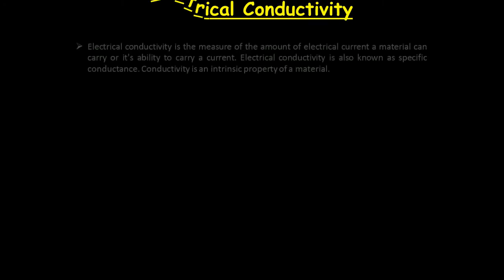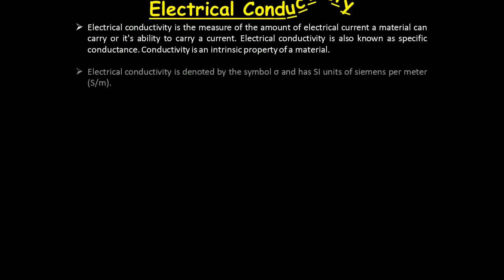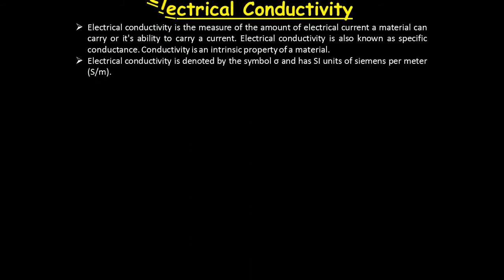Now the electrical conductivity. Conductivity is the measure of the amount of electrical current a material can carry or its ability to carry a current. Electrical conductivity is also known as specific conductance. Conductivity is an intrinsic property of a material.